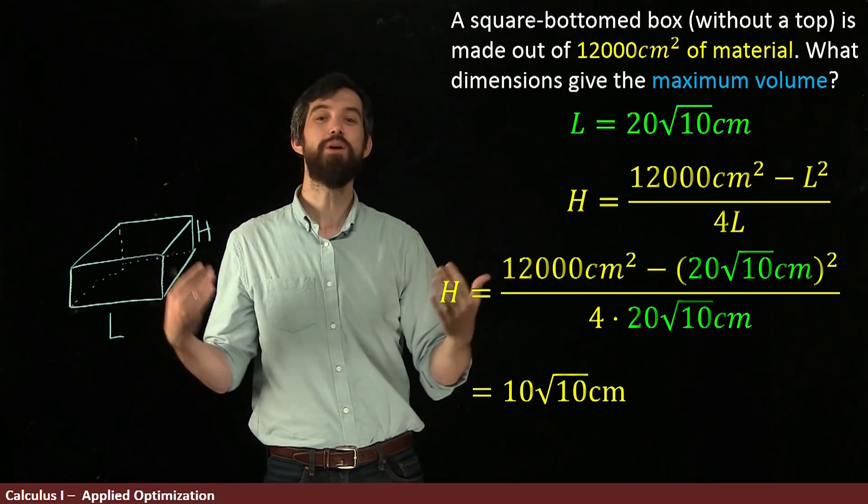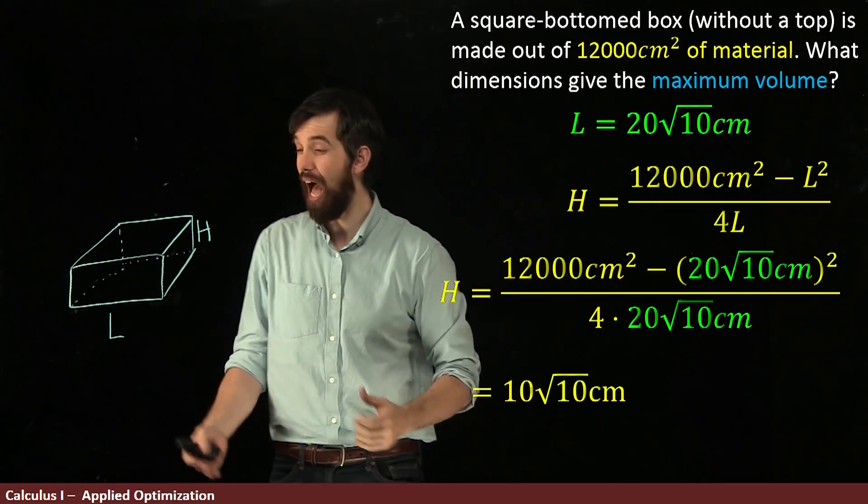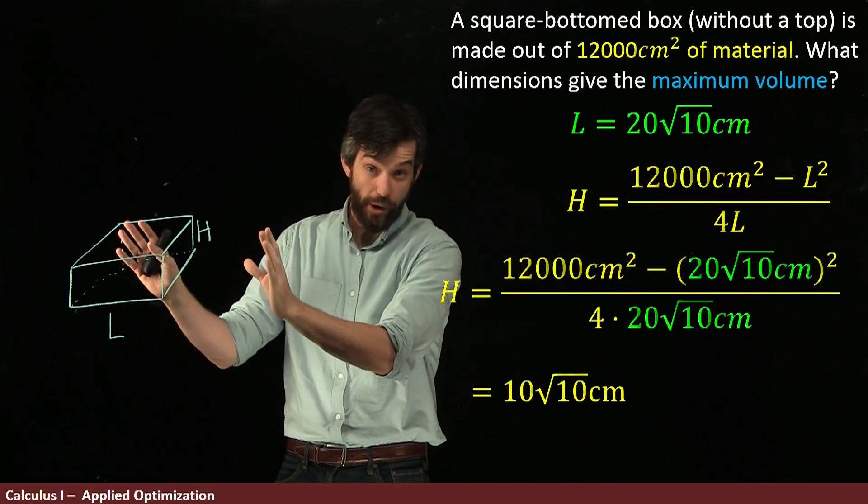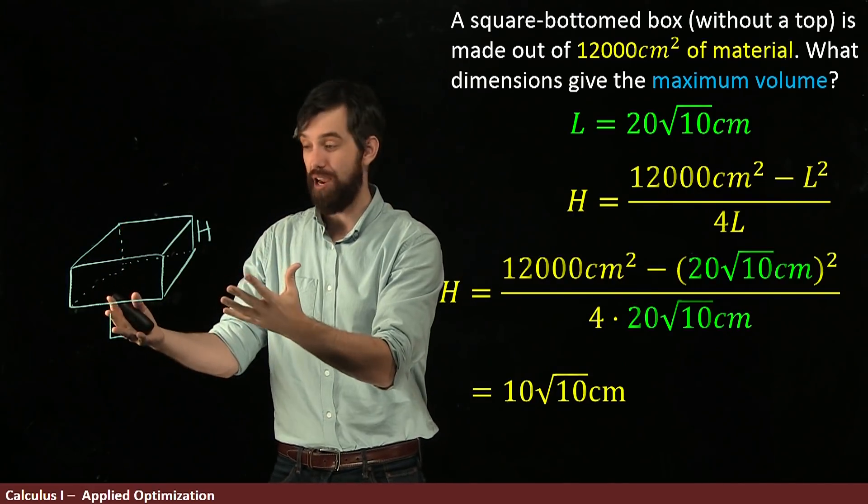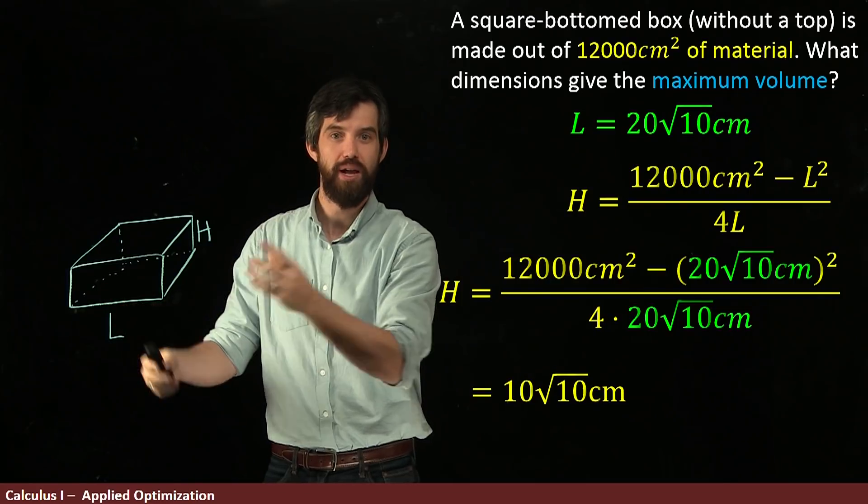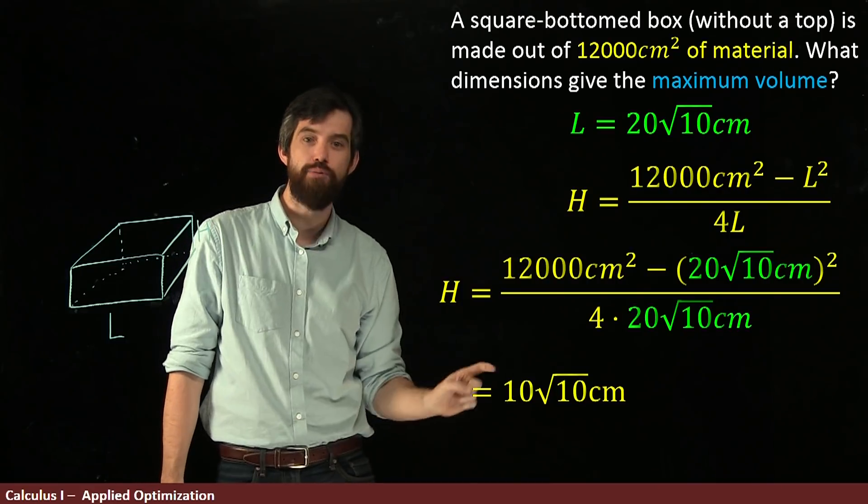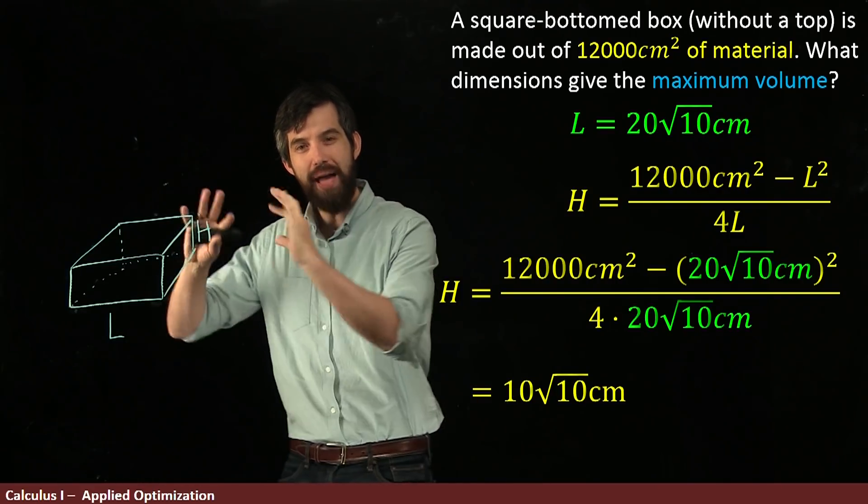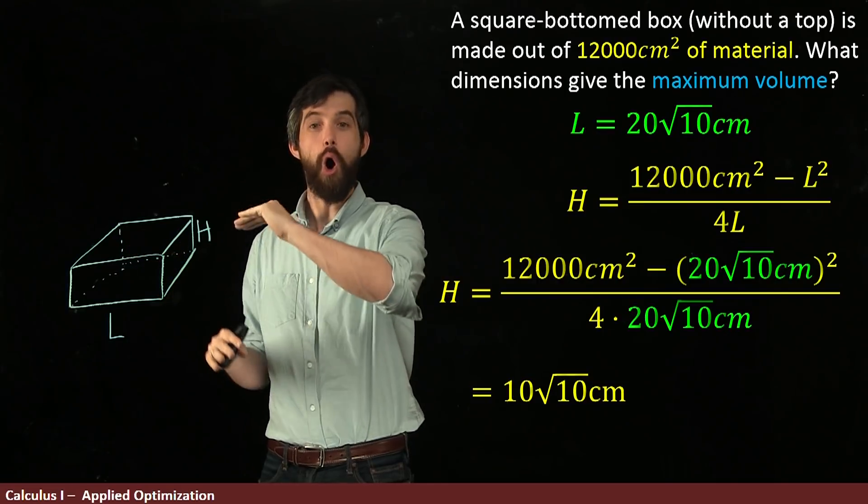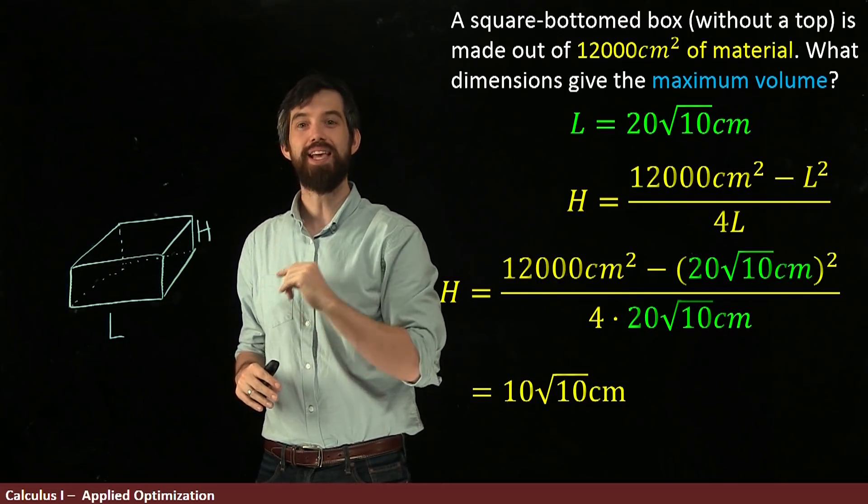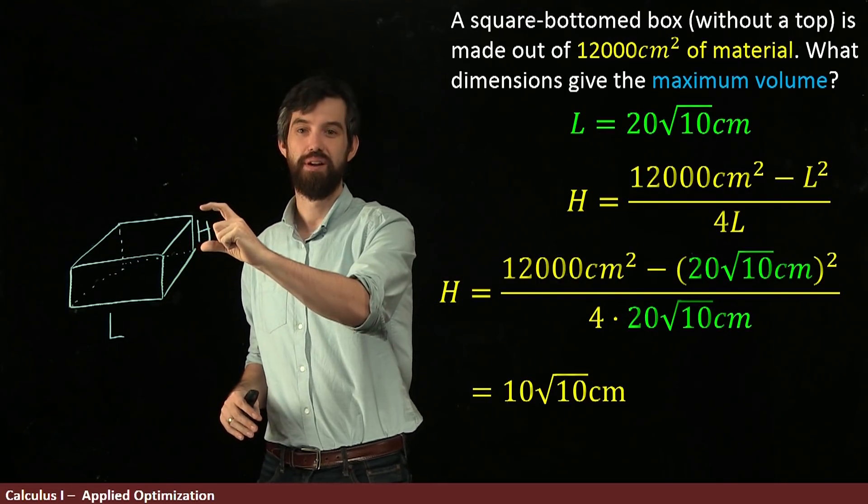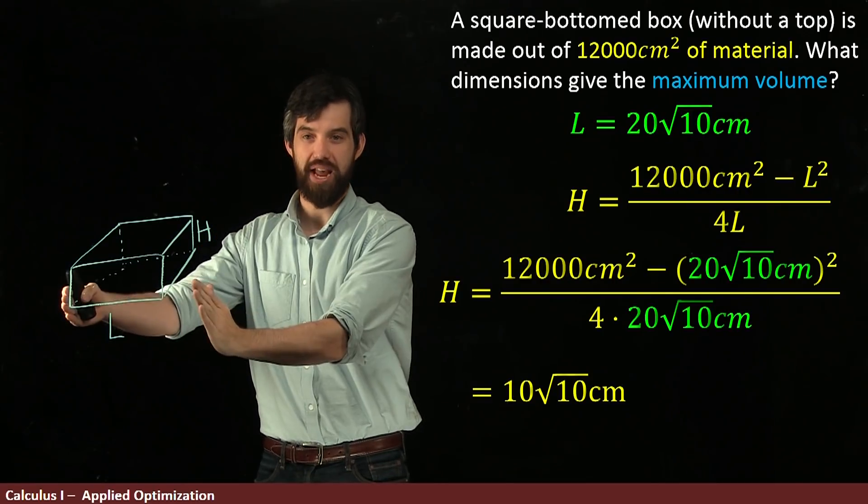Final point. Let's think about what this actually physically looks like. I tried to draw it poorly, but at least relatively accurately to what would be the maximum volume. You see how the length here is 20 root 10 and the height is 10 root 10? So the maximum volume of this open-topped box has a height that is half as large as its length.